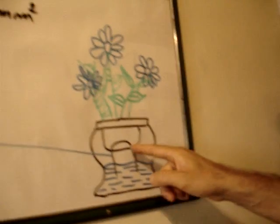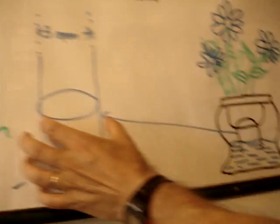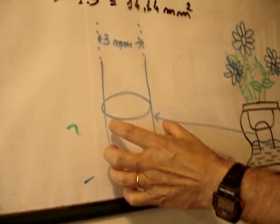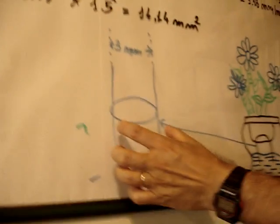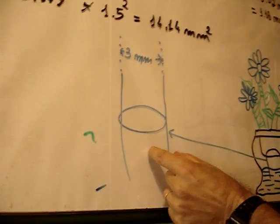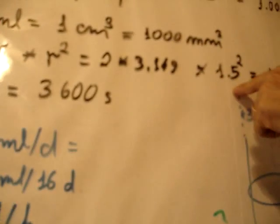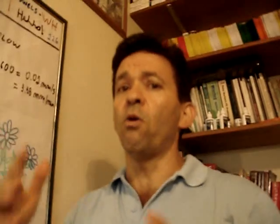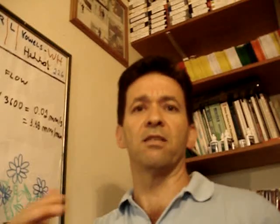We have here the pot designed especially for you. The cord is here and we need to know the diameter of this cord. We are going to take 3 millimeters, so the radius is going to be 1.5 millimeters here. We calculated this. We are going to make this assumption because the water varies — depends on the plant, depends on the weather, depends on many conditions.